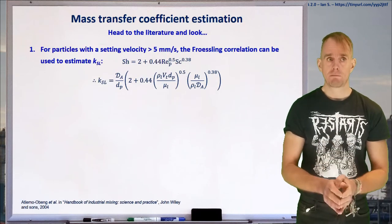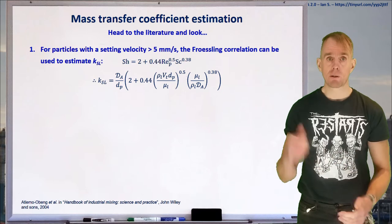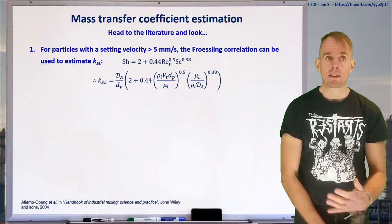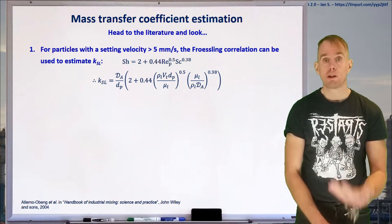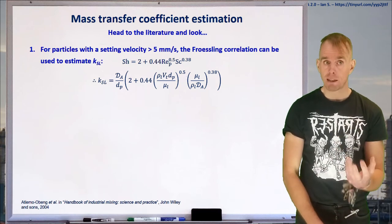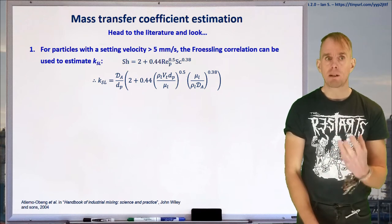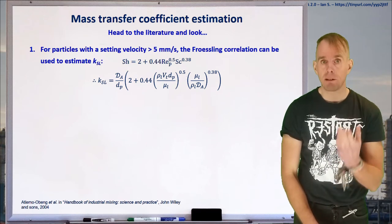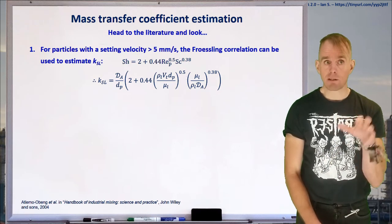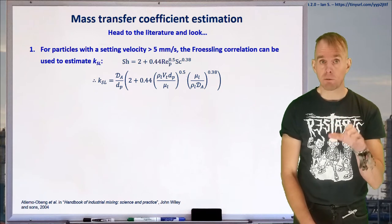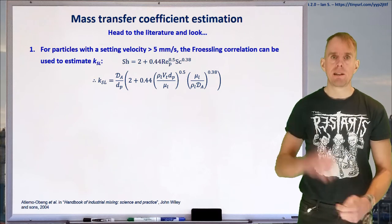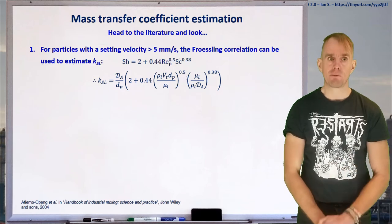Again, go to the literature and look. With minimal looking, you'll come across something called the Freustlin correlation. The Freustlin correlation is very useful. It applies to particles with settling velocities greater than 5 mm per second, and it's a Sherwood number correlation. So our Sherwood number here is written in terms of our particle Reynolds number and our Schmidt number. And our particle Reynolds number is important because, remember, our particle Reynolds number depends on the particle diameter and the particle's terminal velocity. So we need to know Vt here in order to work out our particle Reynolds number, in order to work out our Sherwood number, in order to work out KSL. And I've written the form of that equation explicitly in terms of KSL for you.